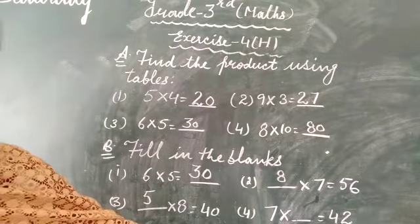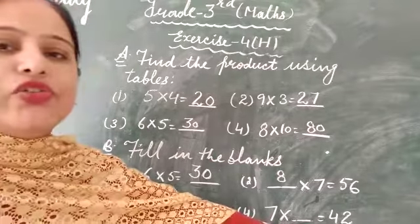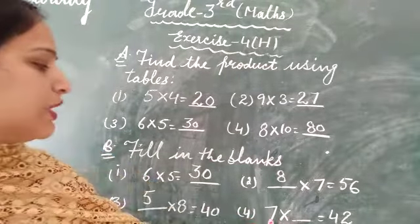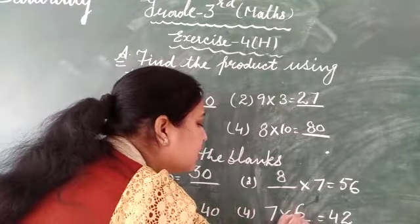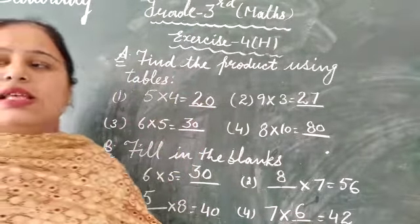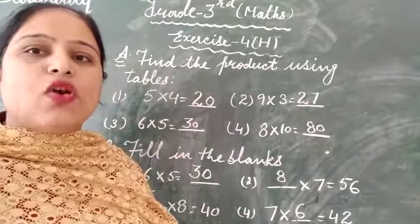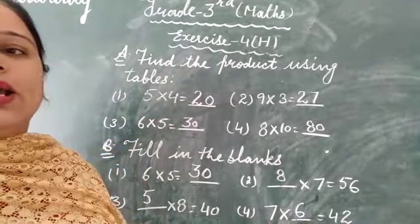Next is fourth part, 7 multiplied with dash is equal to 42. Start to read out table of 7. 7-6s are 42. So you write here 6. Clear with it? Other all questions of this exercise are similar. So solve them. Now we are going to continue our next exercise. Exercise 4-I.